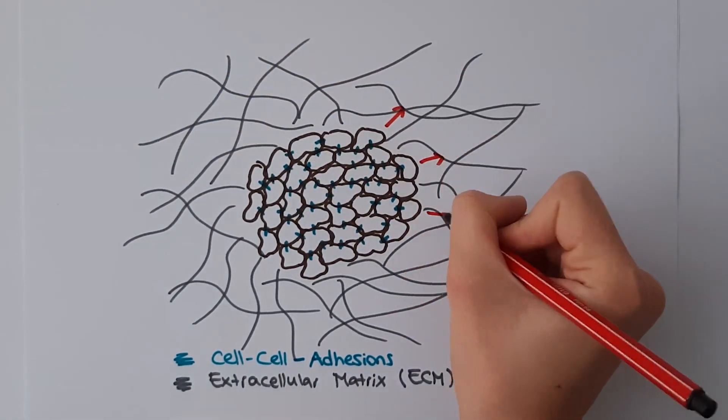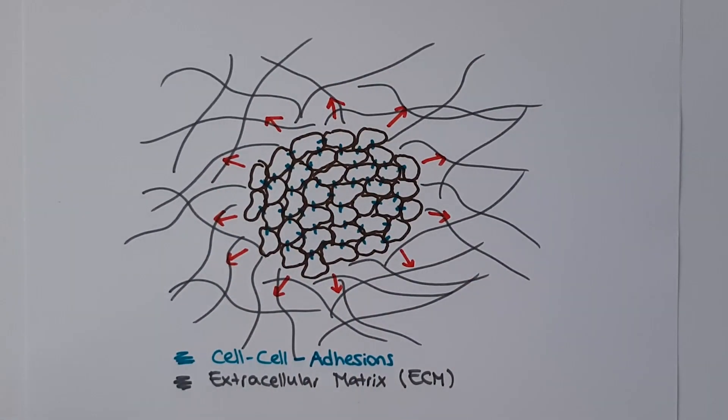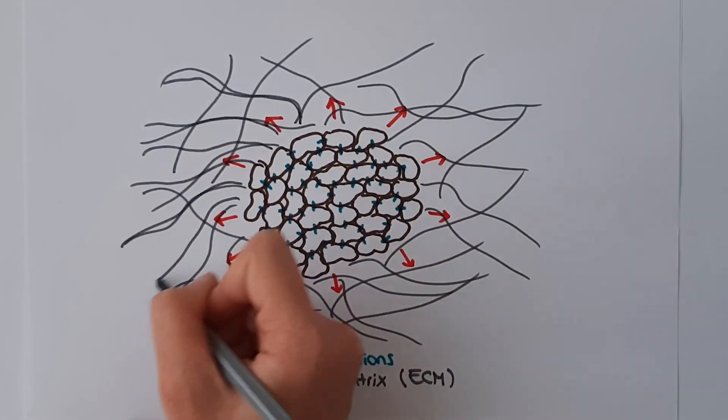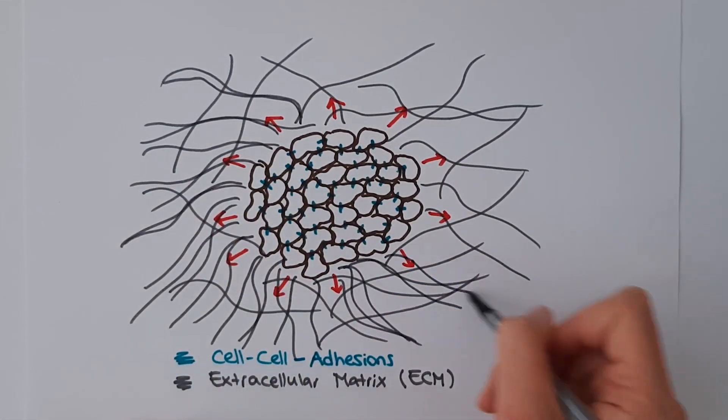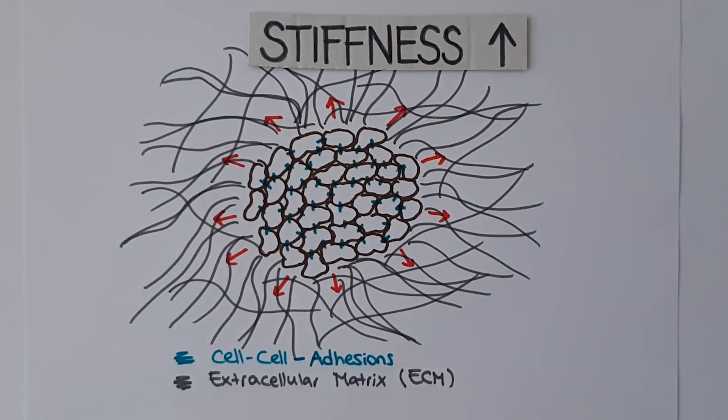During this process, interactions between cells and the extracellular matrix play an important role. In response to tumor growth, the surrounding ECM is remodeled. The matrix fibers align and the stiffness increases. This is called strain stiffening.